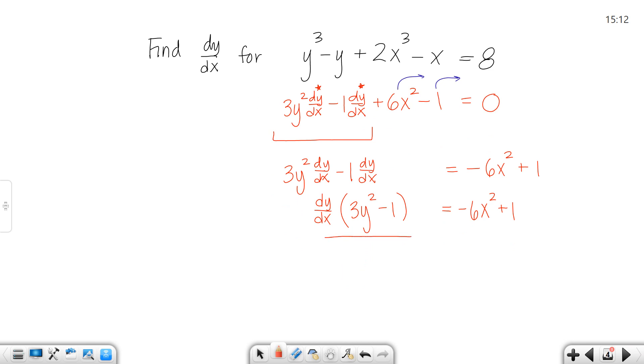To get dy/dx by itself, all I have to do is divide by that factor. And dy/dx would equal (-6x² + 1) / (3y² - 1).